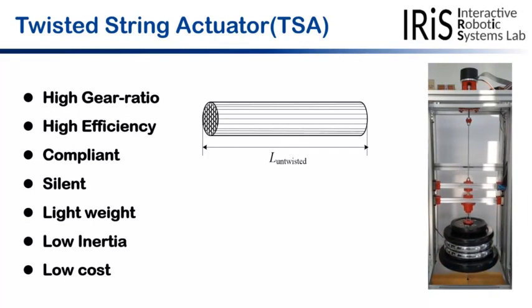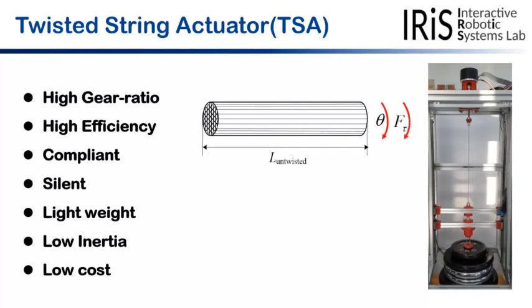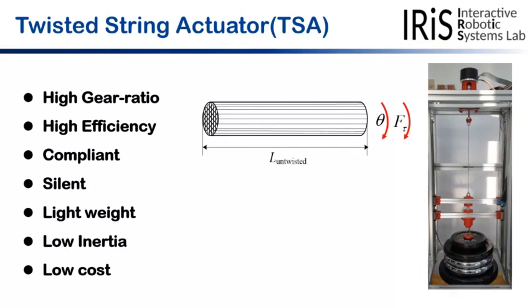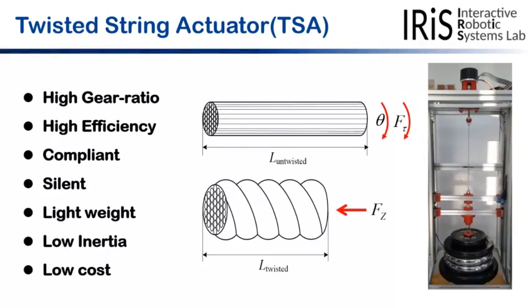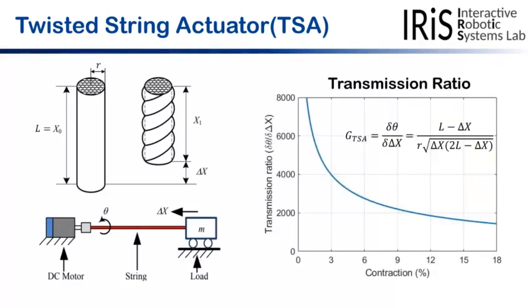There are many advantages by adopting TSA for exoskeletons due to its high gear ratio and efficiency and low weight, inertia, and cost. First, when the string is twisted by relatively low torque, it produces high linear force with contraction. Thus, when the string is twisted, it acts like a gear with a non-linear gear ratio.